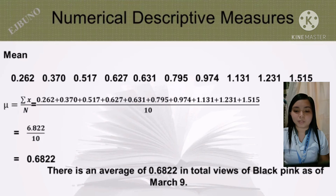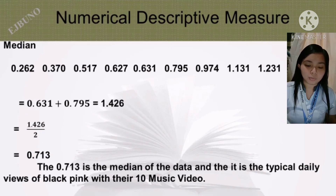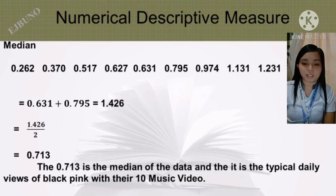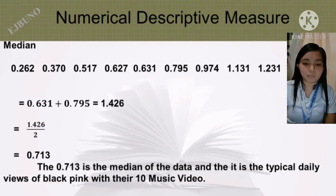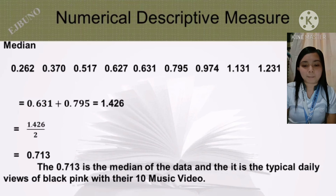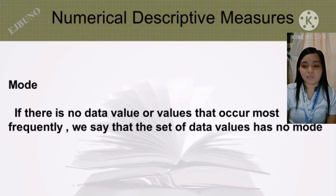The median: the middle of the given data is (0.631 + 0.795) divided by 2 equals 1.426 divided by 2 equals 0.713. The value 0.713 is the median of the data and represents the typical views of Blackpink across their 10 music videos. For the mode: since no data value occurs most frequently, the data set has no mode.